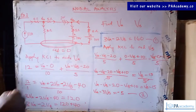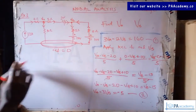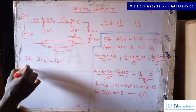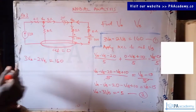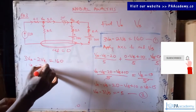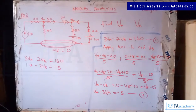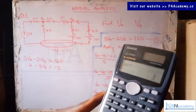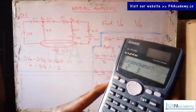Now we've got equation one: 3Va minus 2Vb equals 160, and equation two: Va minus 3Vb equals minus 5. To solve these simultaneously you can use elimination or substitution, or use your calculator. On the Casio fx-991, press Mode three times, select equation, then select two unknowns. Enter A1 as 3, B1 as minus 2, and C1 as 160.